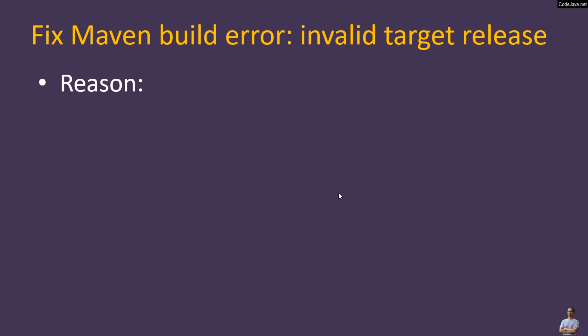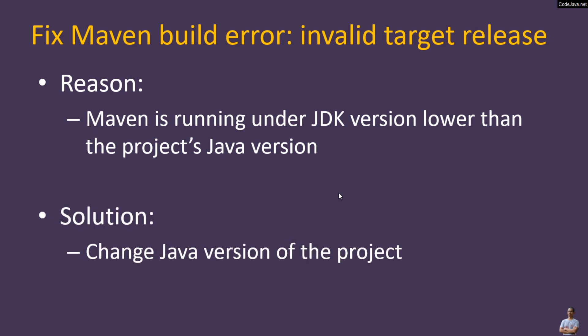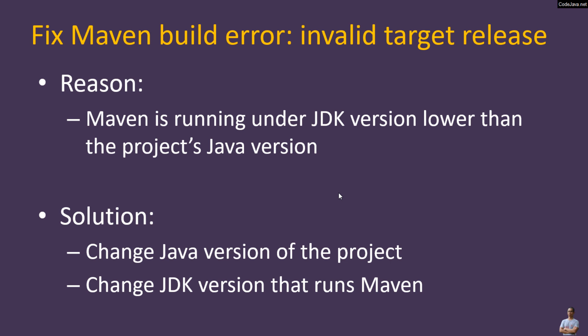You know the reason that you get the Maven build error 'invalid target release' is because Maven is running under a JDK version lower than the project's Java version. The solution is either change the Java version of the project, or change the JDK version that runs Maven.